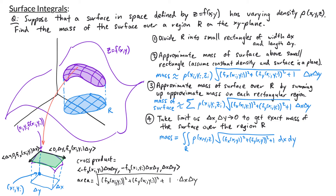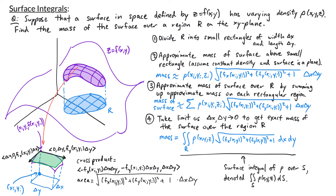If we call our surface S, then this integral is what we call the surface integral of the function rho over the surface S. We denote surface integrals with a double integral over S of rho dS. In our next video, we'll look at how to calculate these surface integrals.